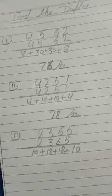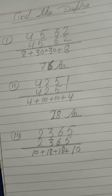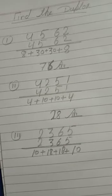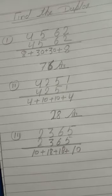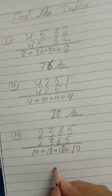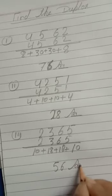Now we have to add, 10 plus 8 is 28, 28 plus 18 is 46, 46 plus 10 is 56. Your final answer is 56.